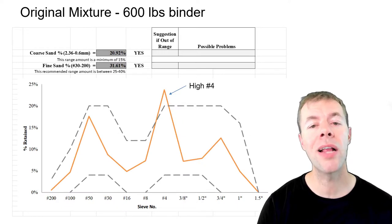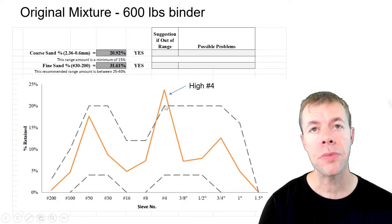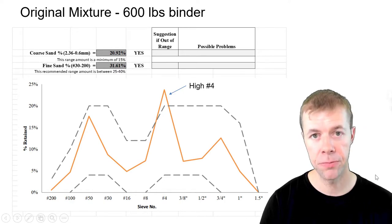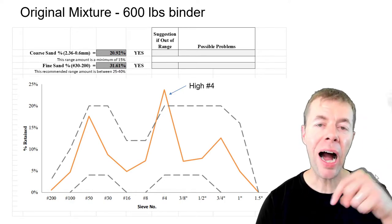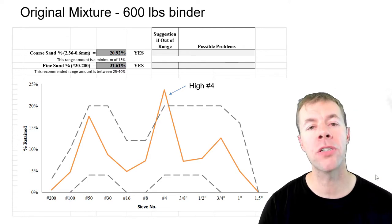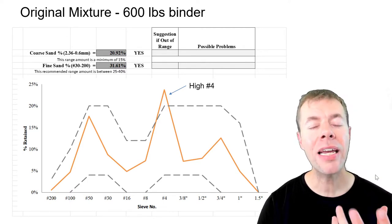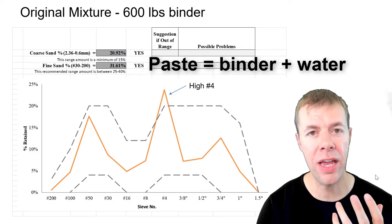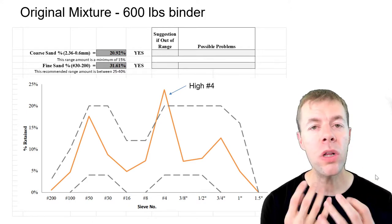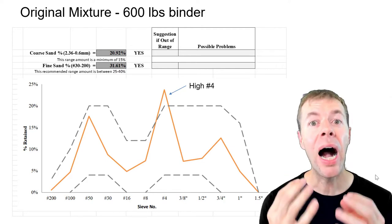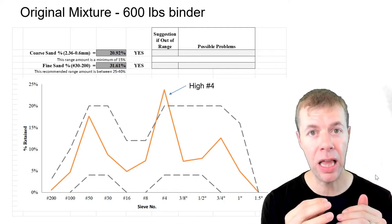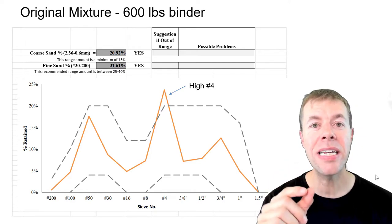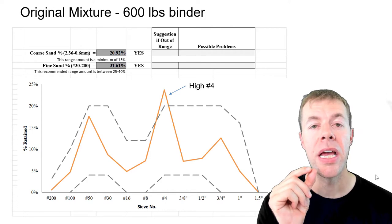Their original mix design had high amounts of number 4, but everything else in the mix looked great. I knew that if I was able to drop those high amounts of number 4, I could lower the paste content and still get a similar workability. Their aggregates were a little bit wacky, and I knew that if I could bring them back in line, I would need less cement paste because I would need less lubricant in the mixture.